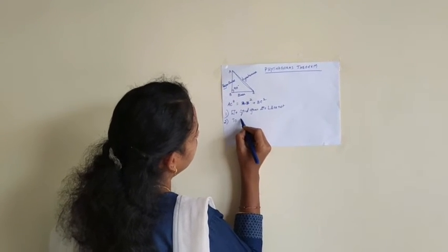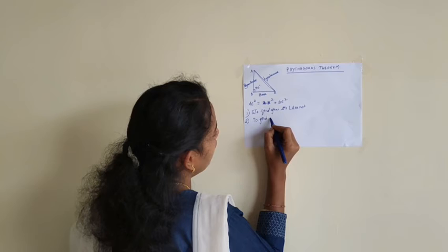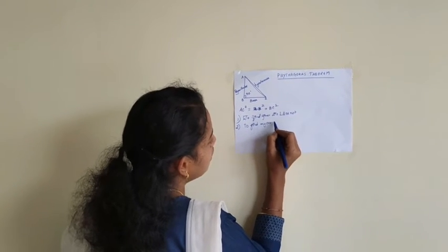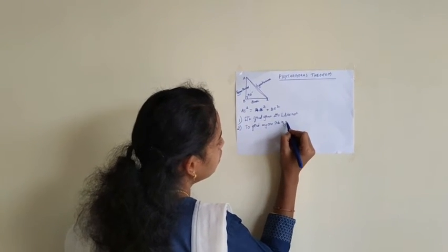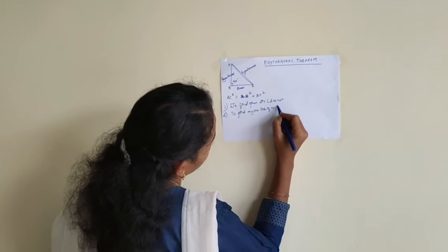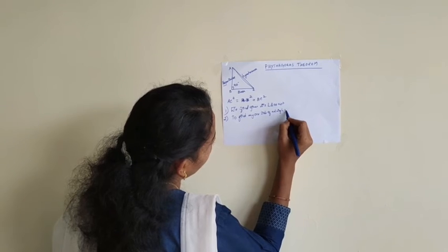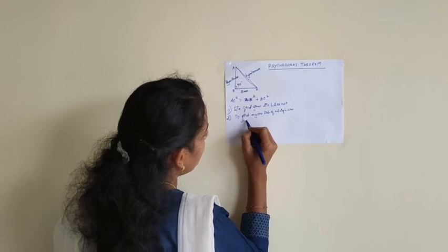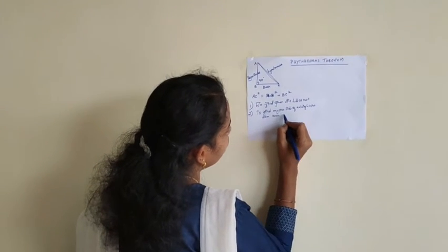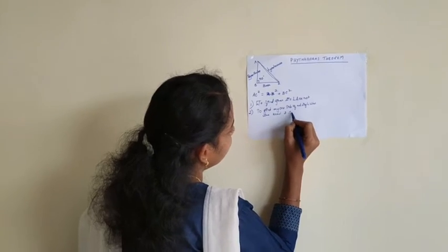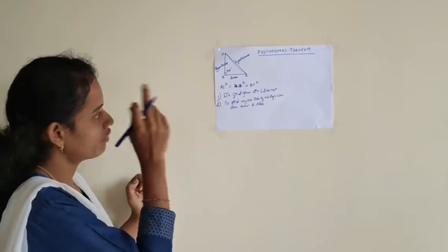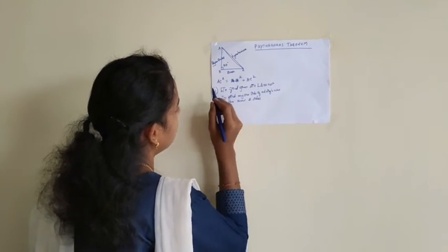So to find any one side of a triangle when we know two sides and we don't know one side, we can use this application.